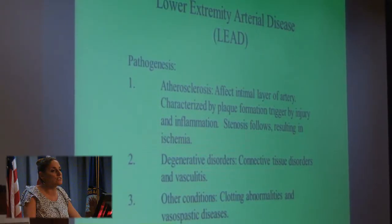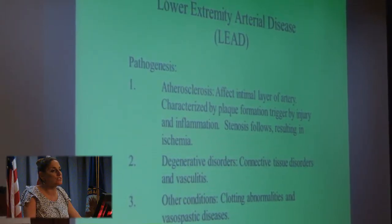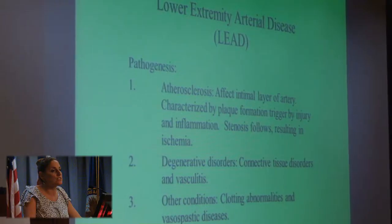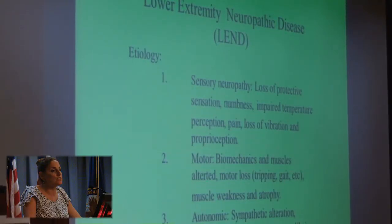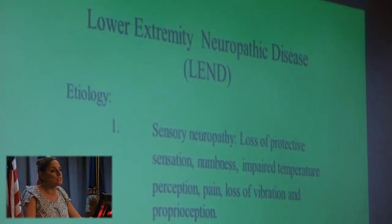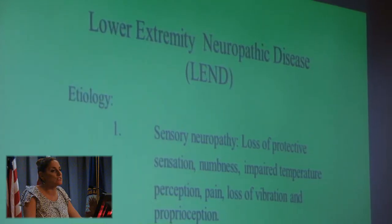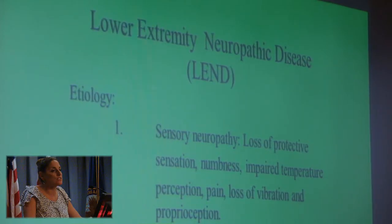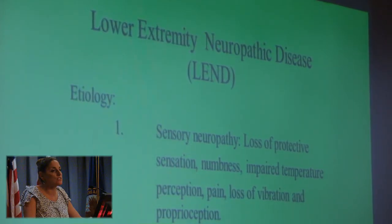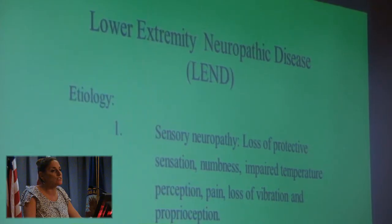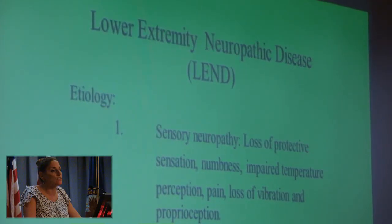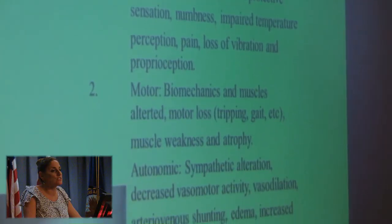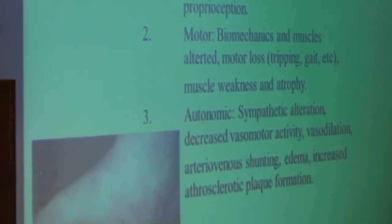Other arterial conditions include degenerative disorders, connective tissue disorders, vasculitis, and vasospastic diseases such as Raynaud's. Neuropathy is most commonly associated with diabetes, and there are three common types. First is sensory neuropathy — damage to the nerves that mediate sensation, first associated with paresthesias, tingling, and burning, then progressing to anesthesia with total loss of sensation. These patients don't realize they stepped on a nail a month ago and are at high risk for painless, repetitive trauma from improper fitting shoes, burns, or going barefoot.